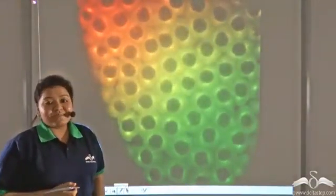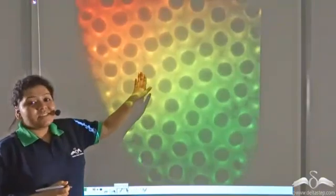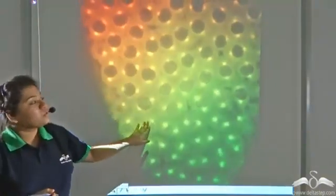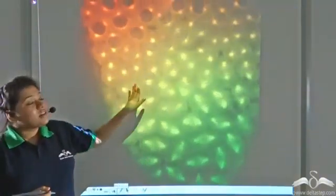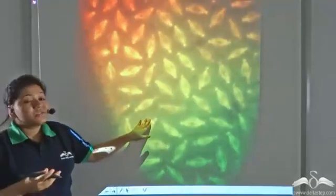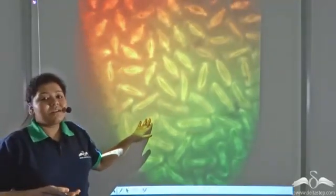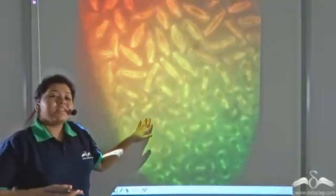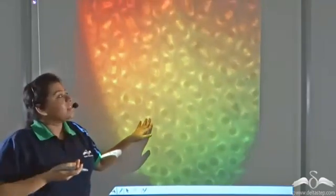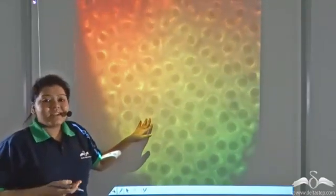The cells of the meristematic tissue that are present in the shoot tip and in the root tip are continuously dividing. So an increase in the cell number would mean the plant increasing in size, and that is how growth takes place in plants.